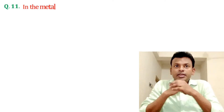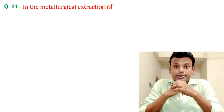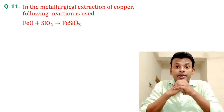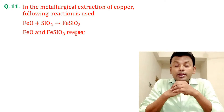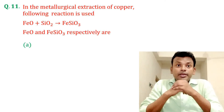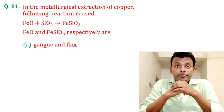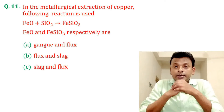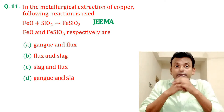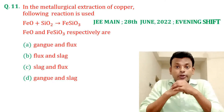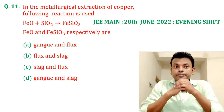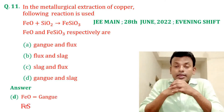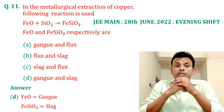Question number eleven: In the metallurgical extraction of copper, the following reaction is used: FeO + SiO₂ → FeSiO₃. FeO and FeSiO₃ respectively are option A, option B, option C, or option D. This question was set in JMN 28th June 2022 evening shift. Answer: Option D is correct. FeO is gangue and FeSiO₃ is slag.